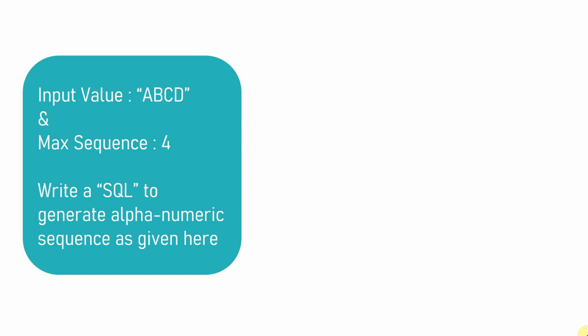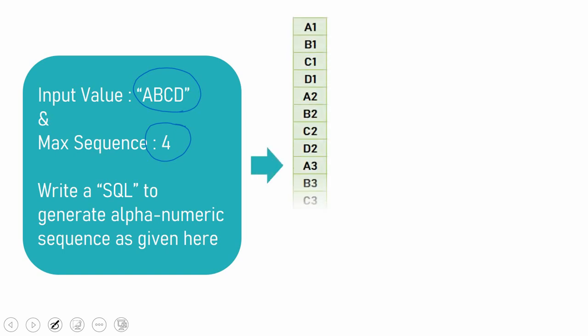So in this question, we are provided with two inputs. One is a string value and another is a sequence number. The expectation is, using this string value and the sequence number, we need to write a SQL to print an alphanumeric sequence such that the string gets repeated as per the sequence times.